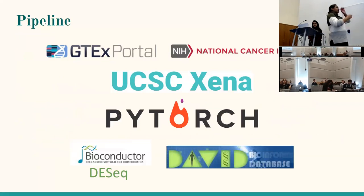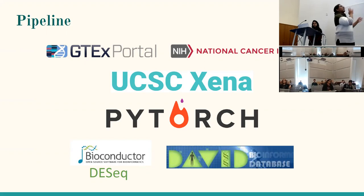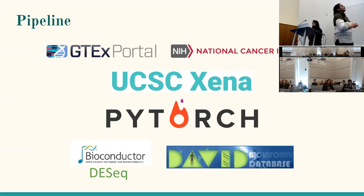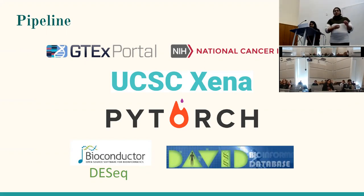This is our general pipeline. We got data from GTEx and TCGA — GTEx for our normal tissue and TCGA for our cancer tissue — and UCSC-Athena to pipeline that data. We used PyTorch to develop our models for classification and back propagation, DESeq2 as our benchmark for statistical differential expression analysis, and DAVID as a pathway analysis tool.